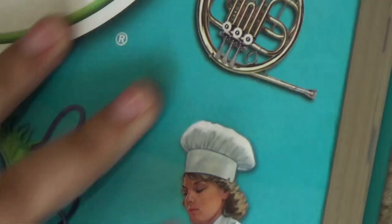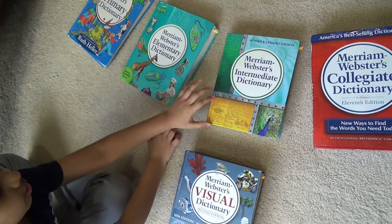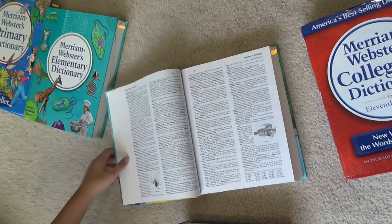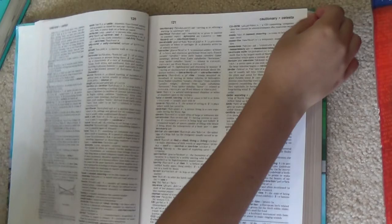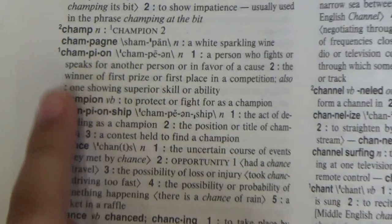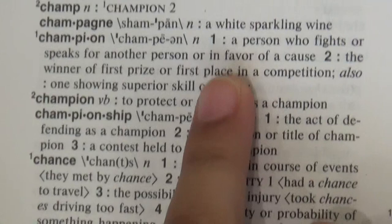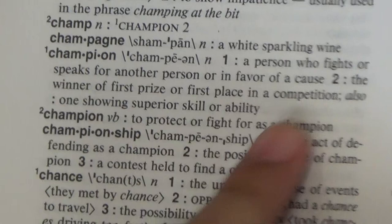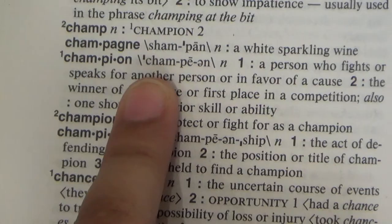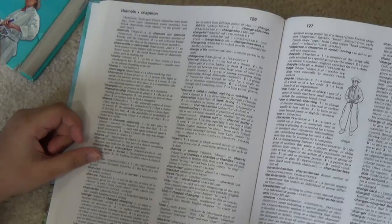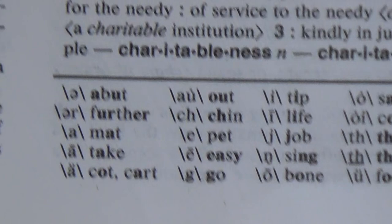Now we move on to the intermediate dictionary. The word champion is right over here. As you can see, we have even more detail. The first definition is 'a person who fights or speaks for another person.' We also now have pronunciation symbols, and over here we have a quick guide to let you know what all the symbols mean. Now you can pronounce the word champion correctly, which is very helpful. That is about the intermediate dictionary.